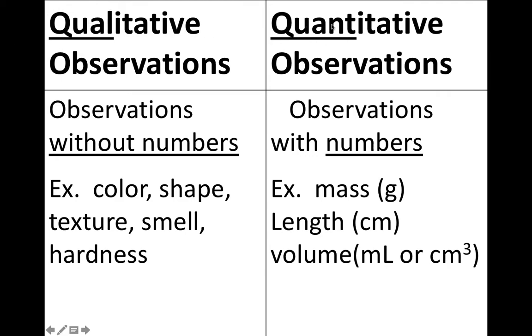Quantitative are observations that you make with measurements, so you'll have numbers. It's not enough just to say tall or short. You need to actually have a measurement for a quantitative observation. So instead of saying I am tall, you would have to measure yourself and say I am six feet tall, and that would be the quantity.